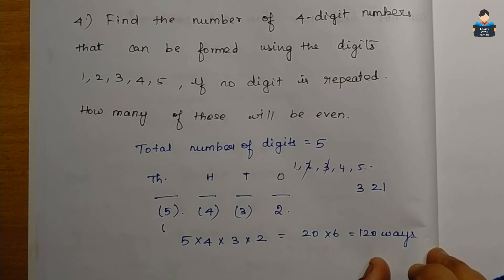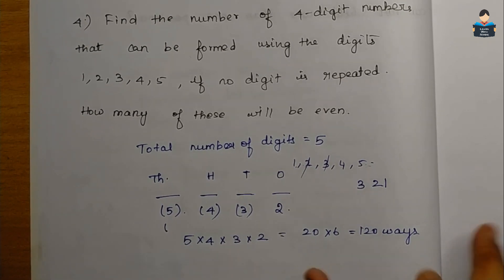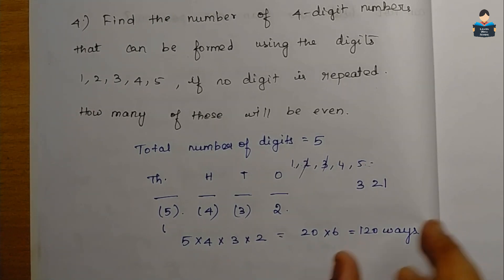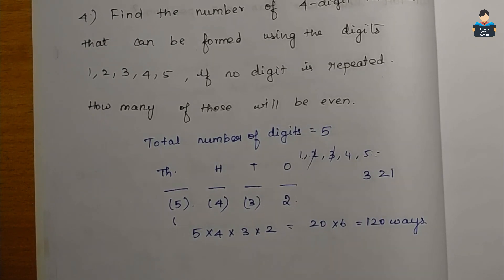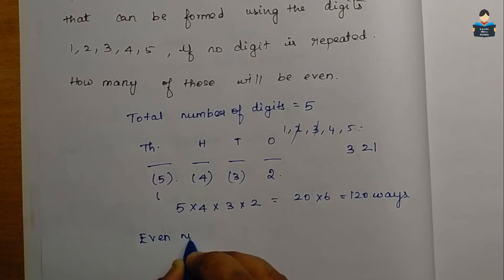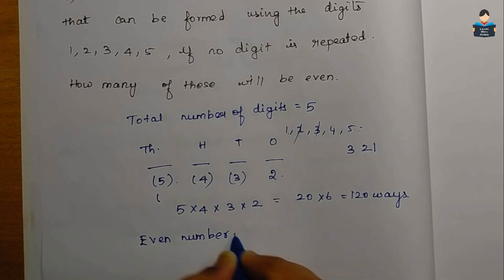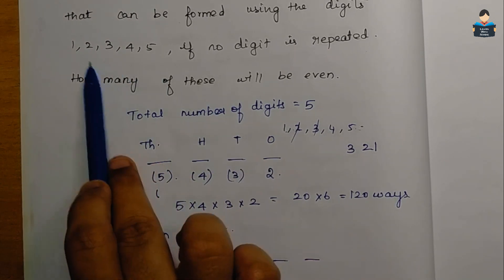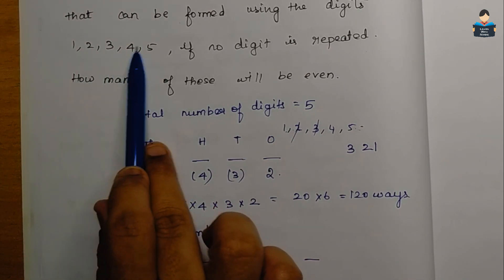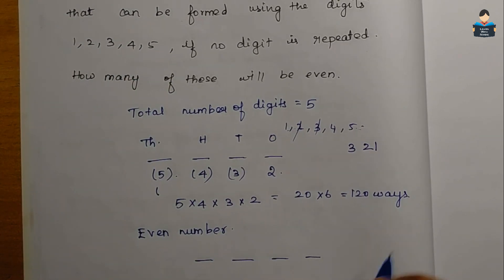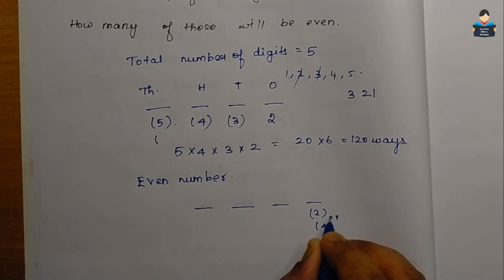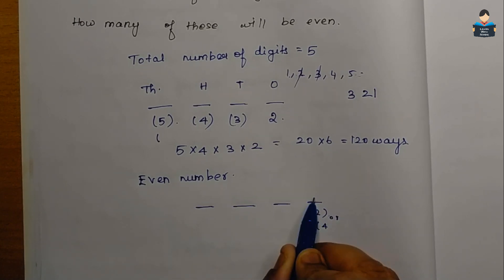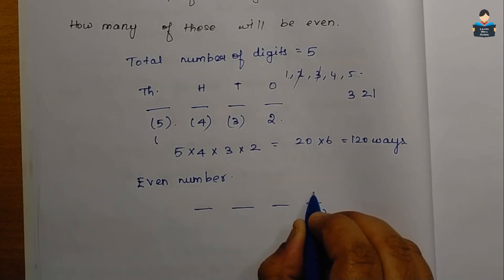Now for the second part — how many of these will be even? From the digits 1, 2, 3, 4, 5, an even number must end in either 2 or 4. So there are 2 ways to fill the 1s place.